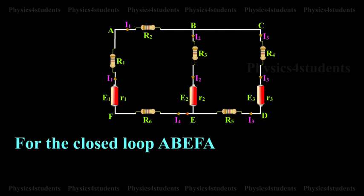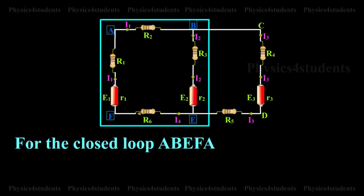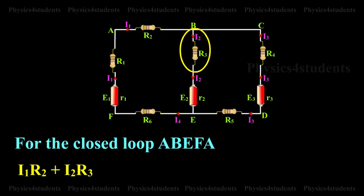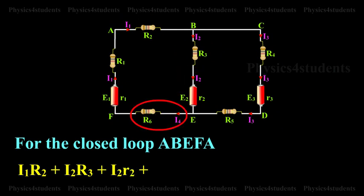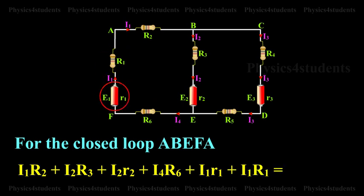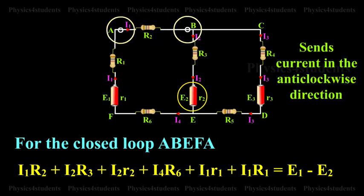For the closed loop A, B, E, F, A: I1·R2 + I2·R3 + I2·R2 + I4·R6 + I1·R1 = E1 − E2. The negative sign in E2 indicates that it sends current in the anticlockwise direction.